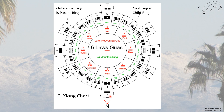The numbers on these trigrams — which are really called Guas — are associated with the location of the Guas in the Later Heavens Ba Gua. So the Gua here corresponds to the same Gua in the Later Heavens arrangement. This is just how these numbers are assigned, and these numbers are also important in the Leaning Stars, but that's a separate video.